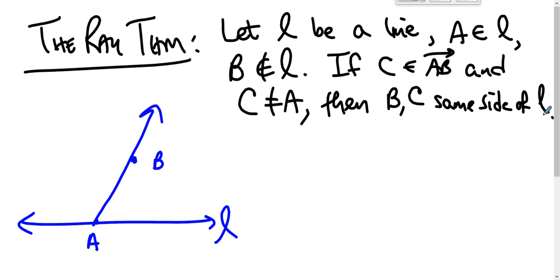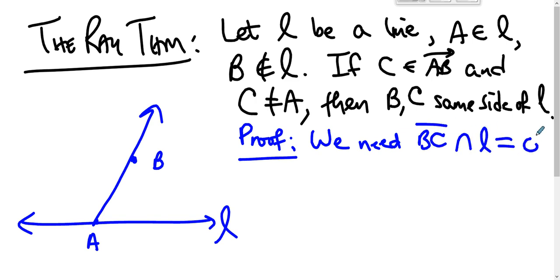So let's sketch the proof. Here's what we need: we need BC intersect L to be the empty set. There are two cases. Case one is the case where C is between A and B.